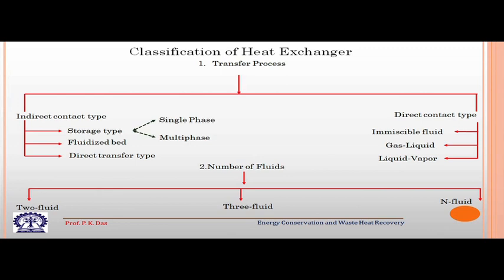Depending on transfer processes, heat exchangers can be classified. Most heat exchangers are indirect contact type, meaning the two fluids do not physically contact each other — they thermally interact through some sort of a solid wall. There is also the storage type heat exchanger, where thermal energy from the hot stream is stored temporarily in some sort of a matrix or body, and that stored energy is then passed on to the cold or low-temperature stream.